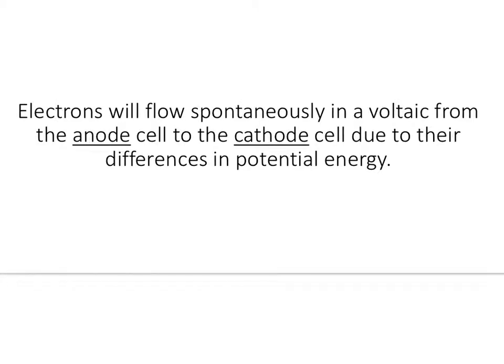So electrons will flow spontaneously in a voltaic cell from the anode to the cathode. Again, I'm going to actually highlight that because you're going to be asked that all the time. That is going from the anode to the cathode. But that is due to their differences in potential energy. That's just kind of how electrons work. If you look at the charges, it makes sense.